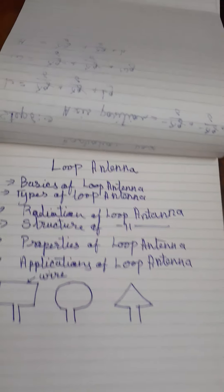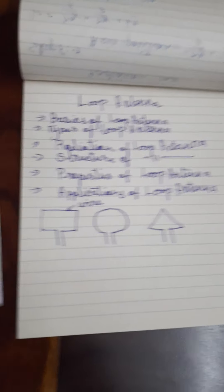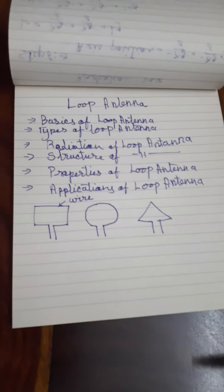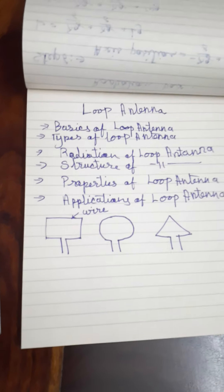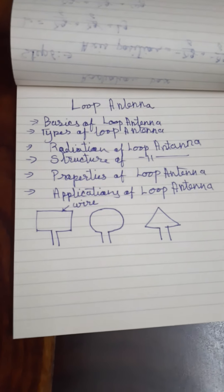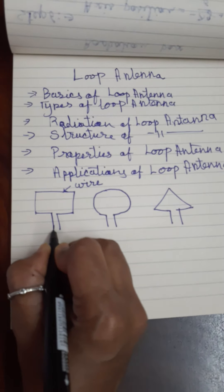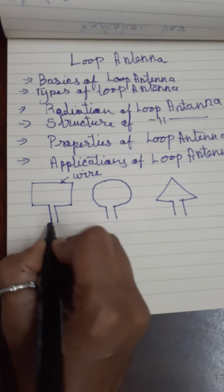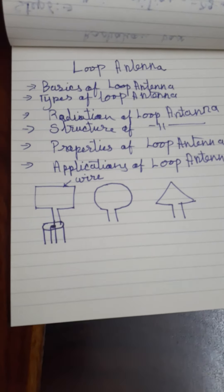Microstrip loop antennas can be seen later. As this chapter is confined to the basic structure and basic working of the loop antenna, let us only look at wired loop antennas in detail. If we have a coaxial cable as a feed to the loop antenna, one end is connected to the inner conductor and another end is connected to the outer conductor of the coaxial cable.